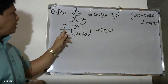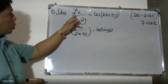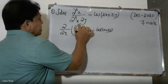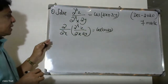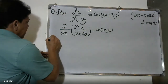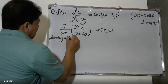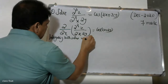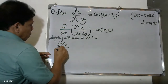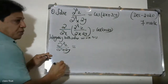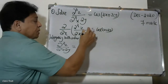To solve d²z/dx·dy, we integrate both sides. Integrating both sides with respect to x. Now, left-hand side is dou square z by dou x into dou y.